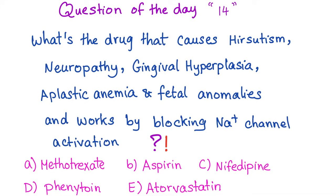Now to the fun part — question of the day. This is my 14th question; if you'd like previous ones, go to my Facebook page. The question is: what's the drug that causes hirsutism, neuropathy, gingival hyperplasia, aplastic anemia, fetal anomalies, and whose mechanism of action is blocking sodium channel activation? A. Methotrexate? B. Aspirin? C. Nifedipine? D. Phenytoin? E. Atorvastatin? Let me know in the comments. I'll see you in the next section when we will continue our discussion on other causes of normocytic anemia.